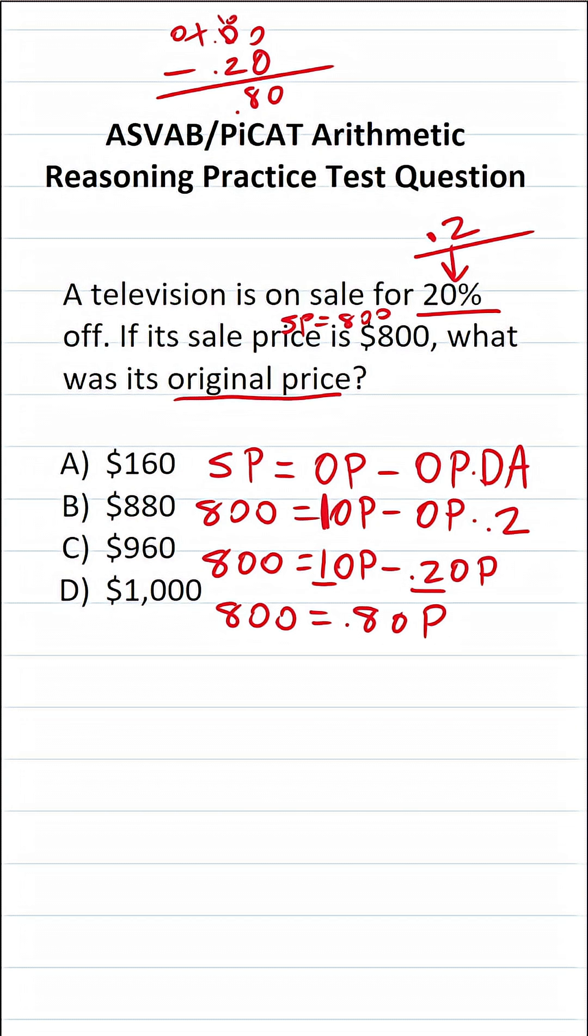This says the sales price of $800 is equal to 0.8, that is 80% of the original price. I know many of you could have jumped right to this step, but I just wanted to show you the process involved to get to this step.